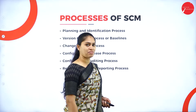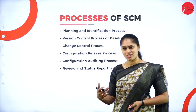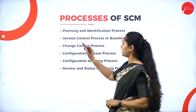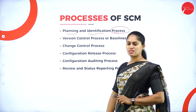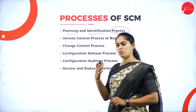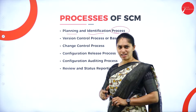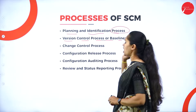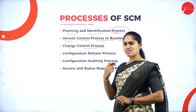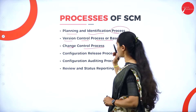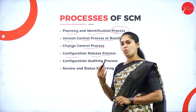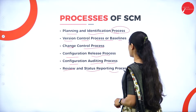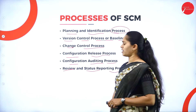Next we will see what are the processes in SCM and how management of software configuration will take place. First, it includes planning and identification of processes. Then version control processes or baseline. Next, we have a change control process. Once it got changed, how it is behaving needs to be checked. Then, configuration release processes — once it got fixed, that needs to be released back. Then, configuration auditing process. Then, review and status reporting process. We will see each stage one by one right now.